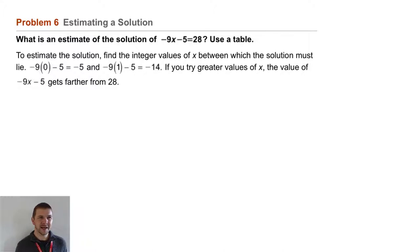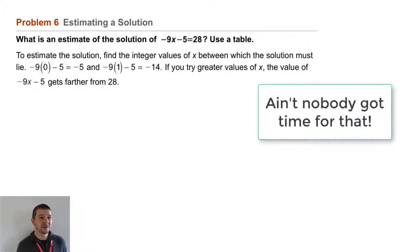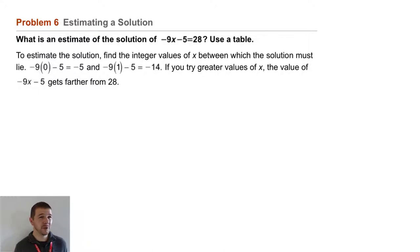If you try greater values of x, the value of -9x - 5 keeps on getting farther from 28. That may indicate to us how to substitute values in order to get closer to 28 in the table that we create as shown below.